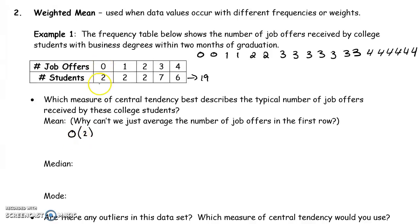That's going to be taking the number of job offers times the number of students with that job offer. Zero offers times two students, plus one offer times two students, plus two offers times two students, and so on. But until we have three offers, seven students, so that's putting a heavier weight on three job offers, and four job offers times six students. We have to divide by the total number of students, the two plus two plus two plus seven plus six, 19 total students.